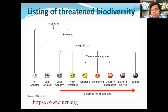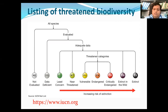The IUCN Red List of Threatened Species is one of the most well-known objective assessment systems for classification of the status of plants, animals and other organisms threatened with extinction. IUCN stands for International Union for Conservation of Nature. I have also given you the website for IUCN, which you can see on this slide.